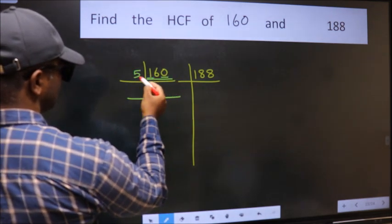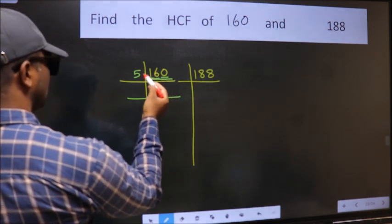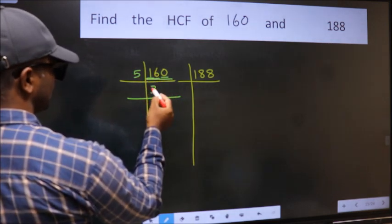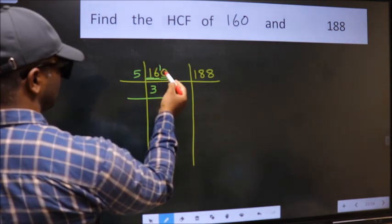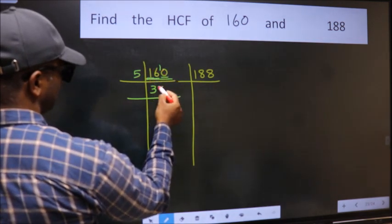First number 1 smaller than 5, so two numbers 16. A number close to 16 in 5 table is 5×3=15. 16 minus 15 is 1, 1 carried forward is 10. When do we get 10 in 5 table? 5×2=10.